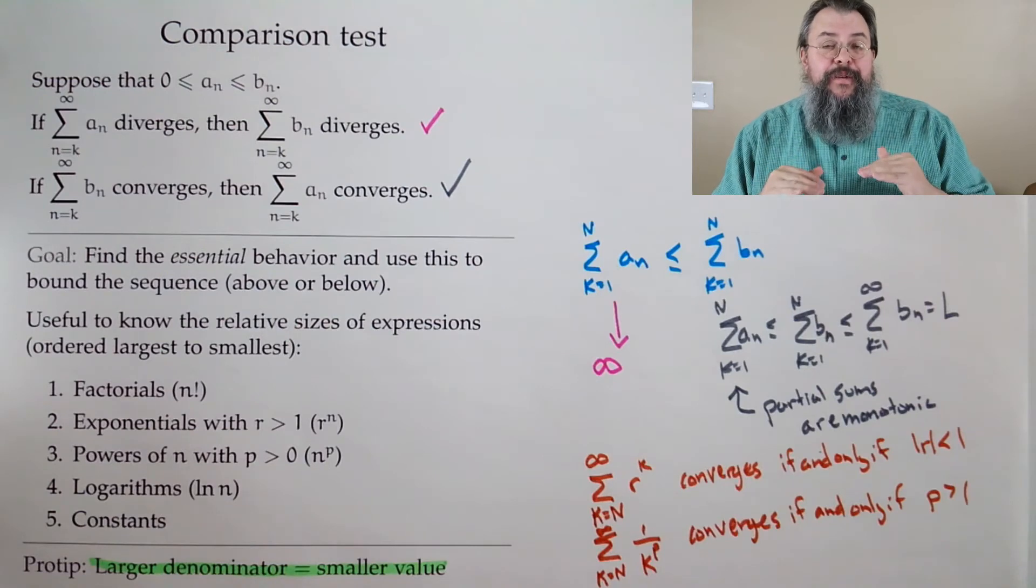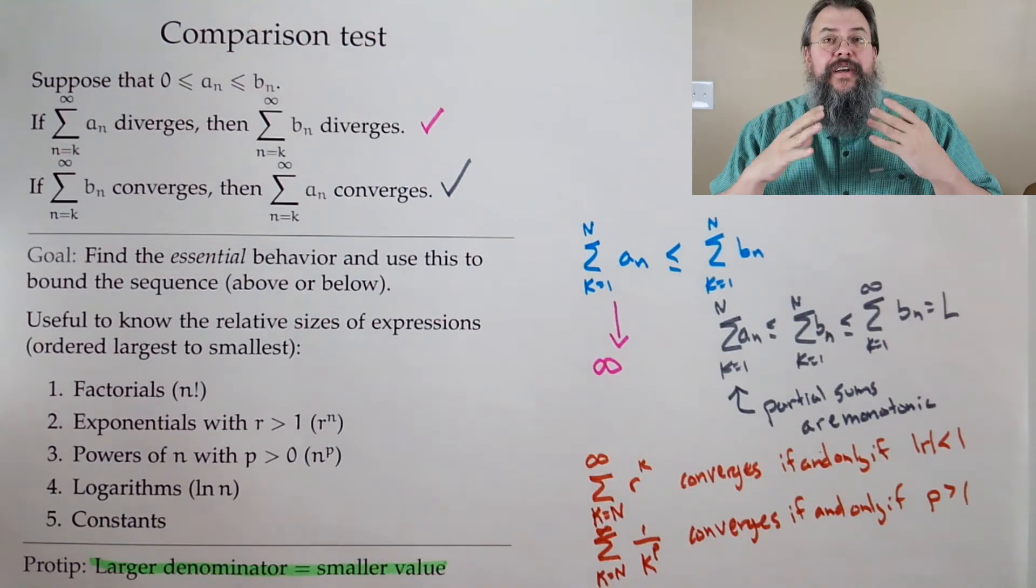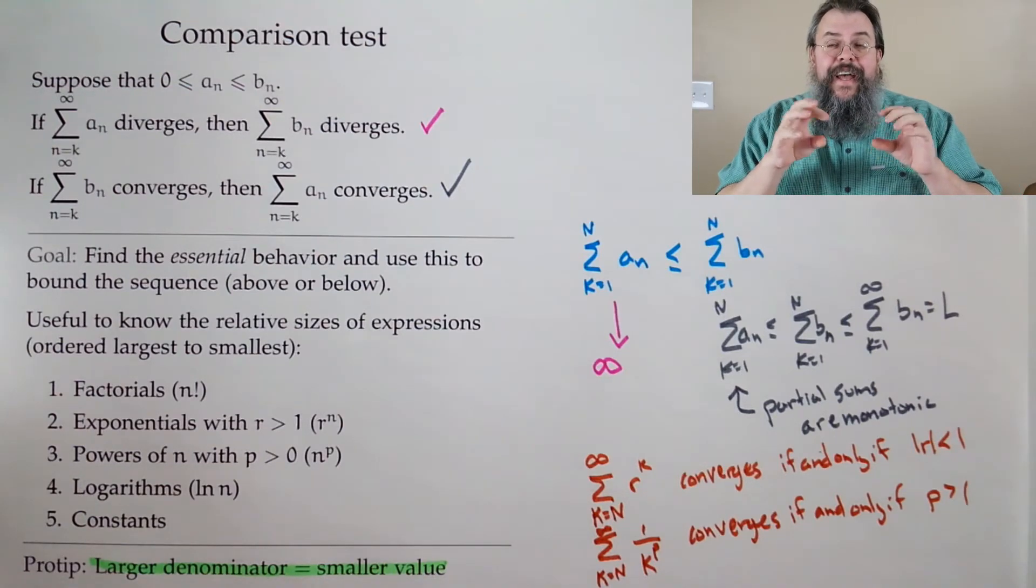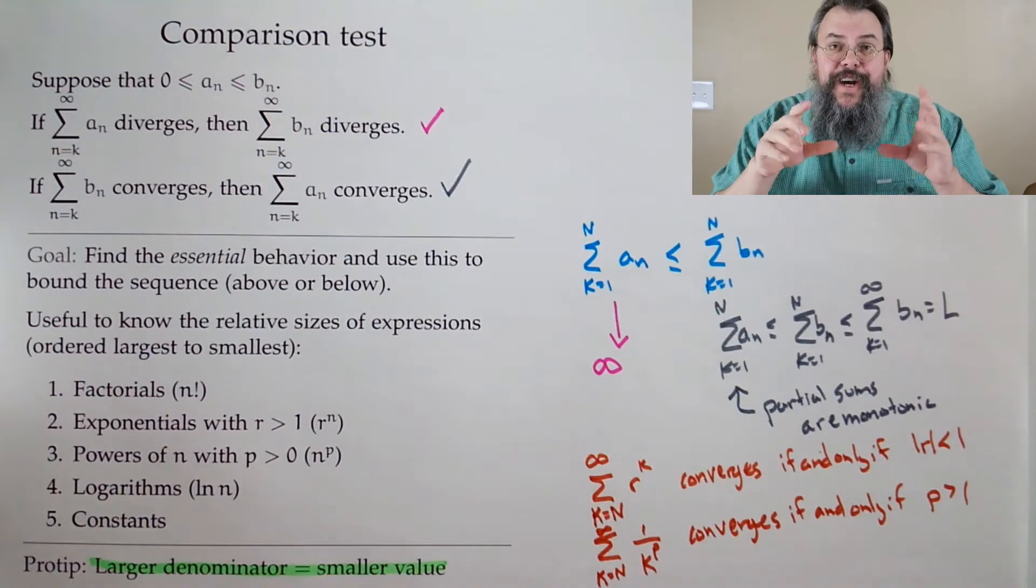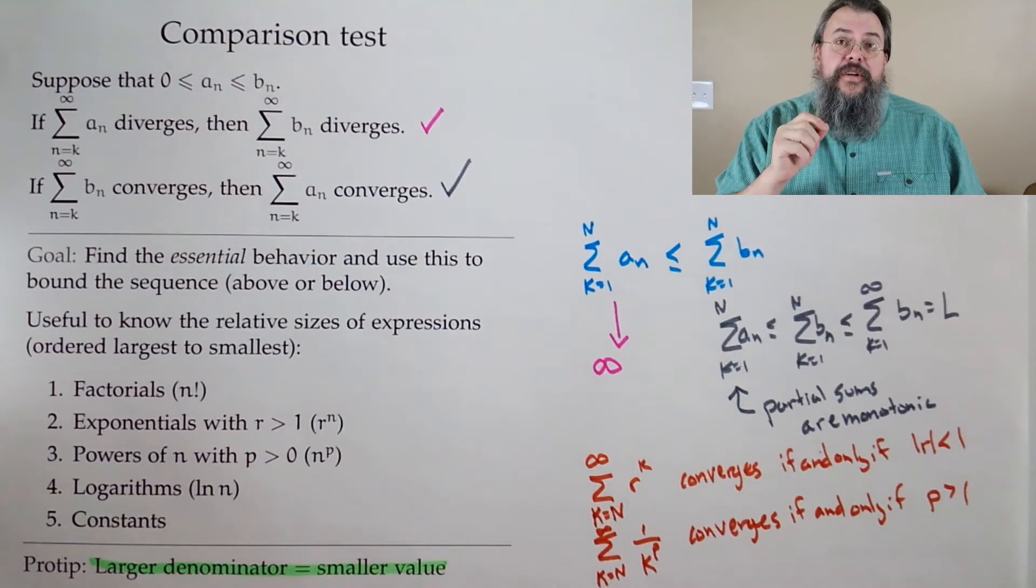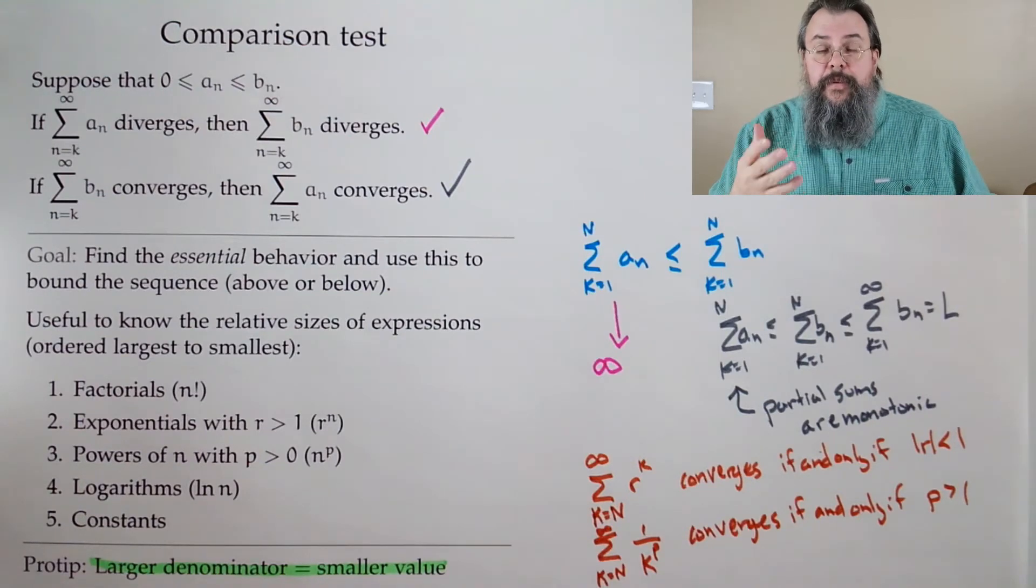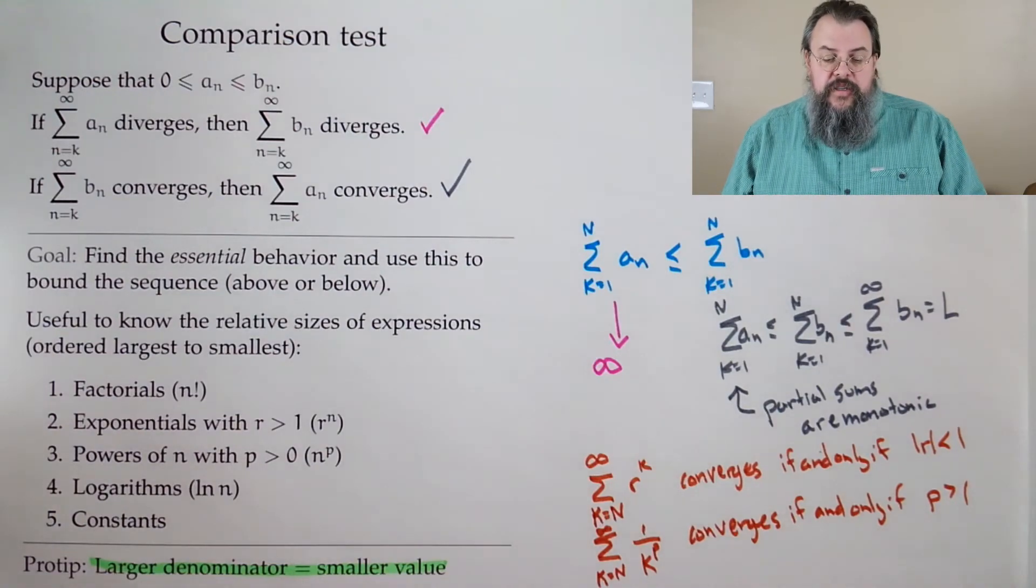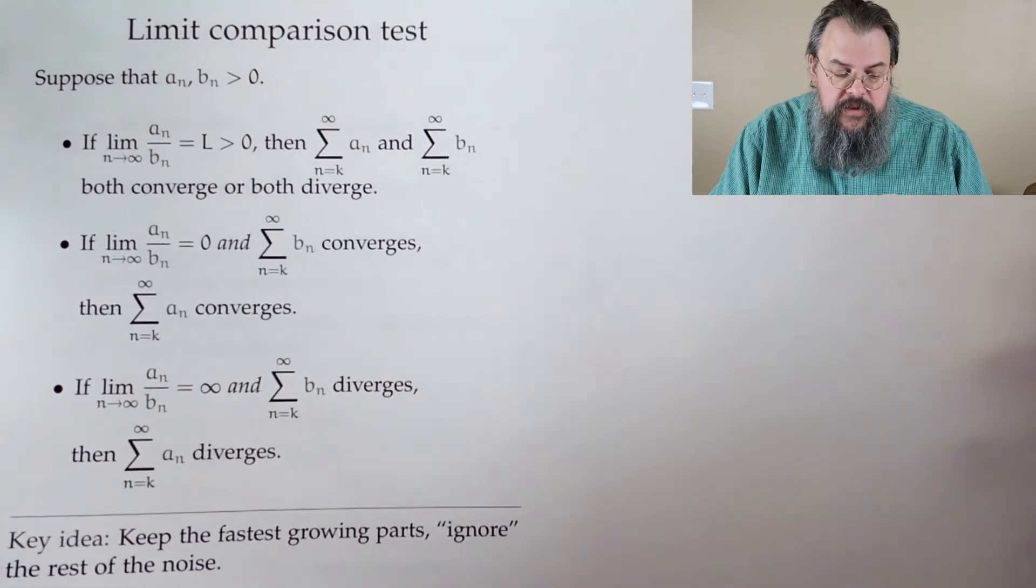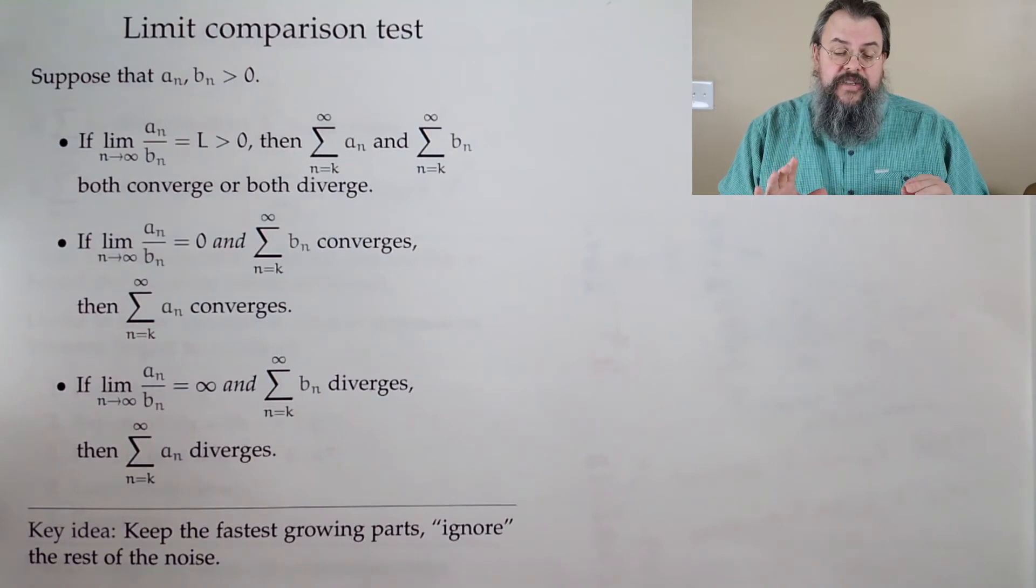Now, part of the problem with the comparison test is finding that right function to compare to, because oftentimes you'll get a lot of what I might call noise. All this extra little bits of flotsam and jetsam floating around. Hard to keep track of it. So there's a refinement. And the refinement is the limit comparison test. Now between the two, limit comparison is a little bit better, but not in all situations. There are situations where you want to have comparisons. So know both.